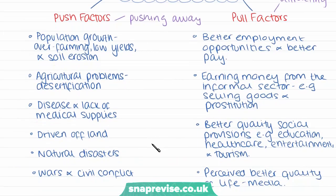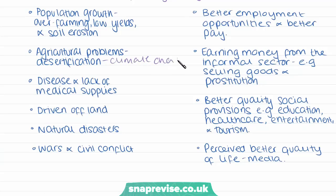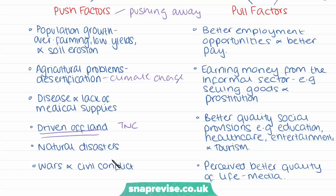Push factors are largely related to poverty, caused by things like population growth — meaning the same area of rural land has to support increasing numbers of people, causing over-farming, soil erosion, and low yields. This can lead to agricultural problems including desertification due to low rainfall, and may be linked to climate change. Other push factors for low-income countries include high levels of local diseases and inadequate medical provision. Agriculture is also increasingly being organised globally, with land previously used to grow local food now used for cash crops sold abroad, and many rural communities driven off their land by TNCs. Natural disasters such as floods, storms and earthquakes, and also wars and civil conflict, also cause people to flee rural areas.